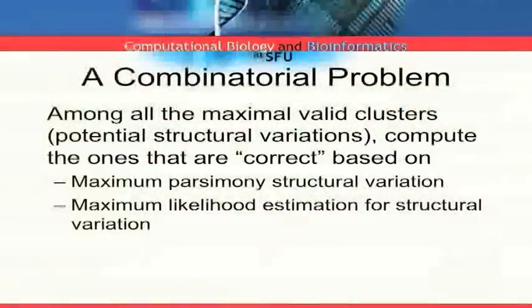And we have to make sure that there are no duplications in the work that we do. We have these clusters, each of which supporting a particular structural variation event. So now we have a combinatorial problem. I have a bunch of clusters supporting or suggesting a structural variation event. And I have a bunch of paired-end reads that map to more than one locations. How do I know which of these structural variations are correct? And how do I know which of these alignments are correct? So I can solve these simultaneously either through maximum parsimony or maximum likelihood estimation.